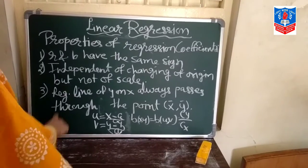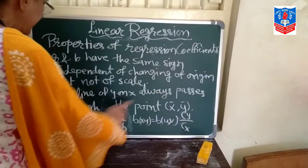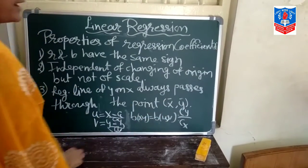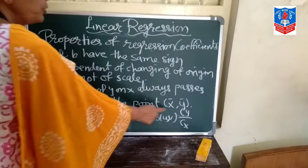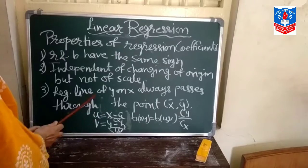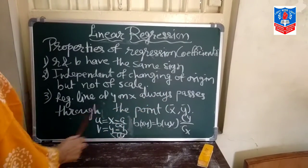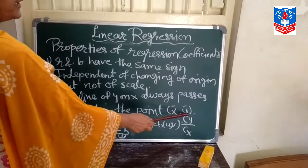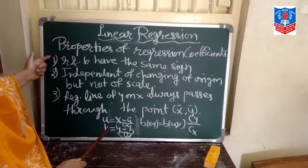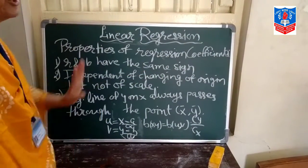The last property: the regression line of Y on X always passes through the point X-bar and Y-bar. X-bar and Y-bar are both averages. So this regression line of Y on X always passes through the point X-bar and Y-bar. These are the three properties of regression coefficients.